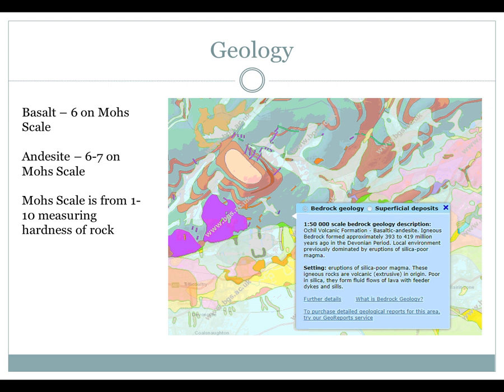So, the geology of Clackmannanshire — two main types of rock: basalt and andesite. These are volcanic rocks essentially. They are about 6 to 7 on the Mohs scale, and that scale goes from 1 to 10 measuring the hardness of rocks — 10 being a diamond, the hardest rock we know of. So these are quite hard rocks, quite difficult to erode. How then is that going to impact on your rates of erosion? How is it going to impact on the size and shape of the pebbles that you see? That's where you can link that in.